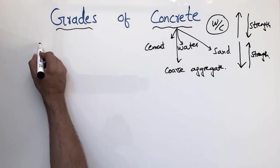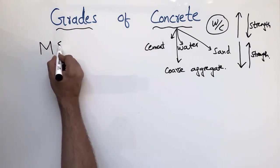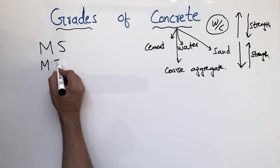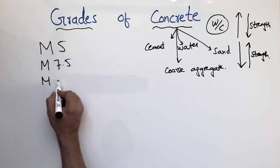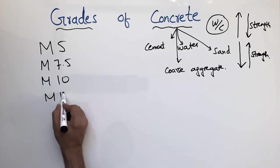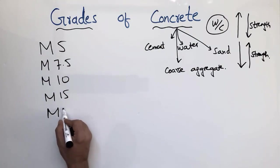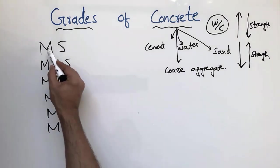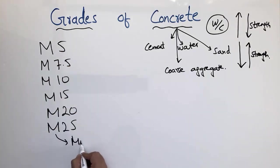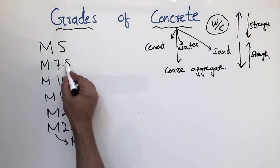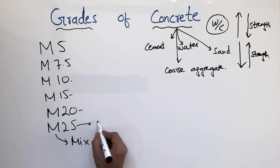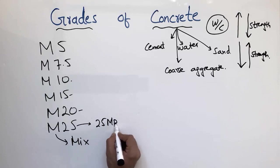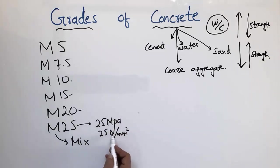The grade of concrete is generally represented by 'M' followed by a numeric value — for example, M5, M7.5, M10, M15, M20, M25. Here 'M' represents the mix (mixture of concrete), and the number — such as 5, 10, 15, 20, or 25 — represents the strength of the concrete in units of megapascals (MPa), which is the same as Newtons per square millimeter.